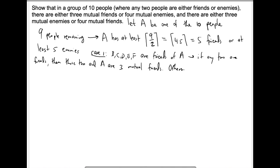Otherwise — meaning no two from this group of five are friends — that means all of them are mutual enemies. So we're going to say there are at least four mutual enemies. If five of them are mutual enemies, that means four of them are definitely mutual enemies, so at least four are mutual enemies.